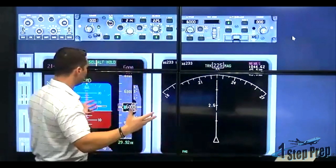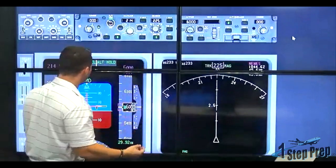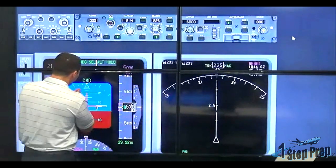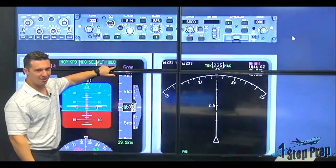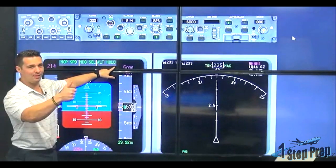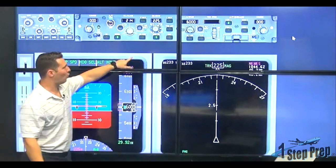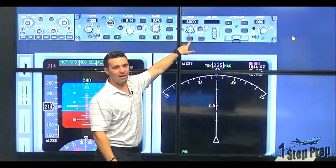Now, what do you mean? Well, take a look closely. Altitude hold is engaged. It's on the FMA. That means we have it. Is altitude hold illuminated on the MCP? No.